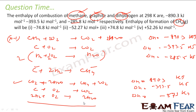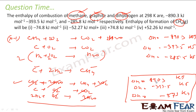Adding the three reactions, CO2 cancels, 2H2O cancels, and 2O2 cancels. What remains is C + 2H2 → CH4, which is exactly what we want. Adding the delta H values: 890.3 + (−393.5) + (−571.0) = −74.8 kJ/mol. So the enthalpy of formation of CH4 is −74.8 kJ/mol.